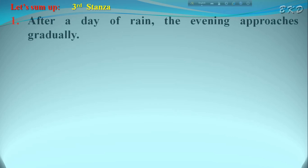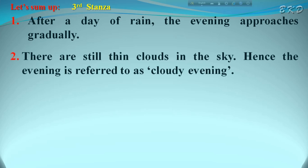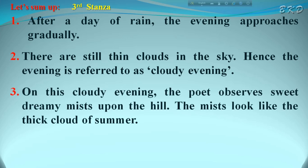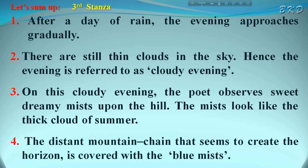Let's now sum up the third stanza. After a day of rain, the evening approaches gradually. There are still thin clouds in the sky; hence the evening is referred to as a cloudy evening. On this cloudy evening, the poet observes sweet, dreamy mists upon the hill. The mists look like the thick cloud of summer, and the distant mountain chain that seems to create the horizon is covered with the blue mists.